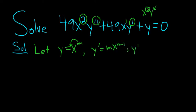Then you do it one more time, so y double prime. You take the m minus 1 and put it in the front. Then you subtract again from the exponent. So subtracting 1 one more time will give you m minus 2.